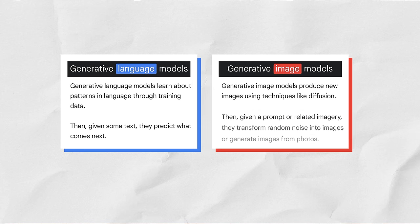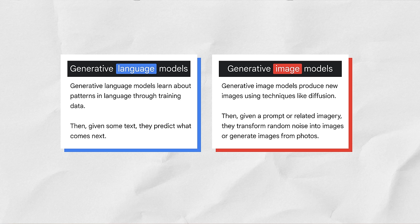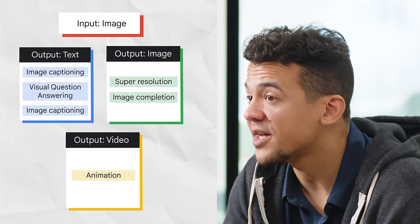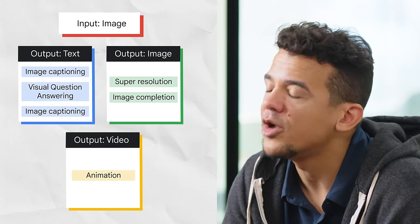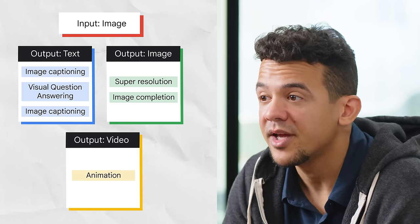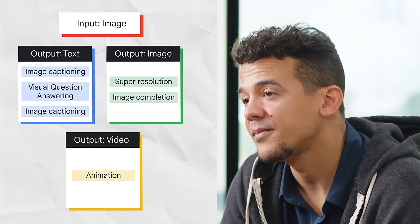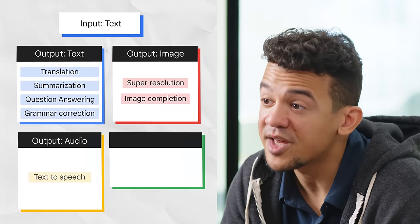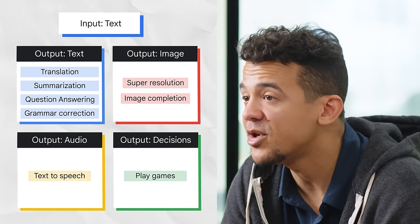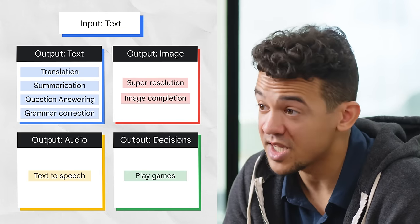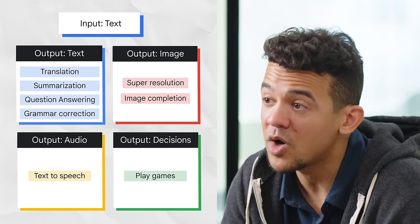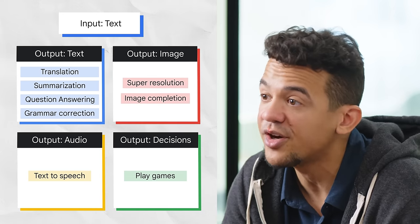Large language models, which generate novel combinations of text in the form of natural-sounding language, are only one type of generative AI. A generative image model takes an image as input and can output text, another image, or video. For example, under output text you can get visual question answering; under output image, an image completion is generated; and under output video, animation is generated. A generative language model takes text as input and can output more text, an image, audio, or decisions. Under output text, question and answering is generated; and under output image, a video is generated.